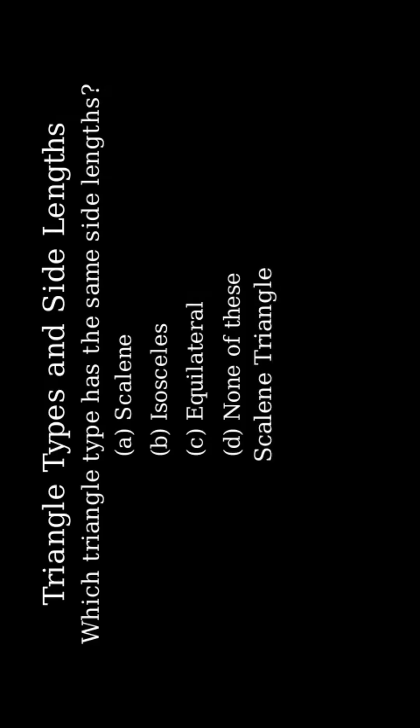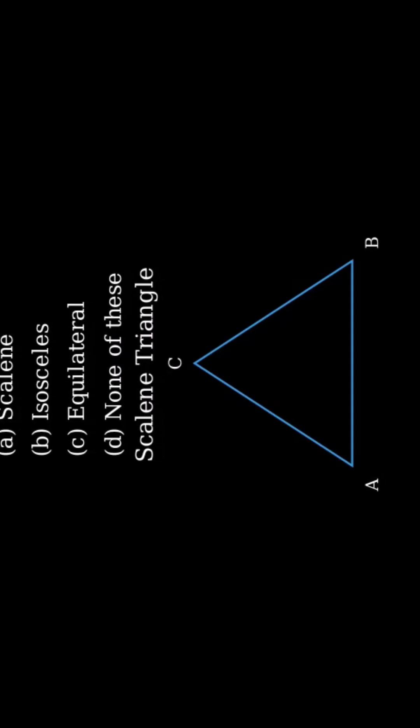Let's break down each type of triangle. Now consider Scalene Triangle. A Scalene Triangle has all three sides of different length. Since all sides are different, a Scalene Triangle does not have all sides equal.